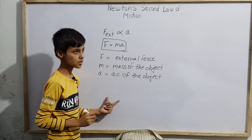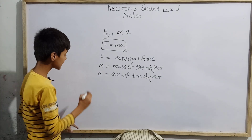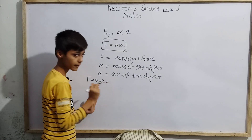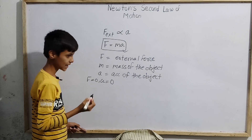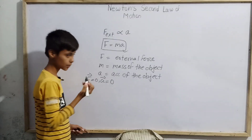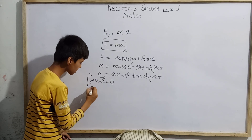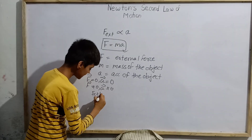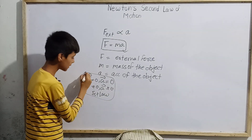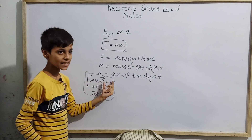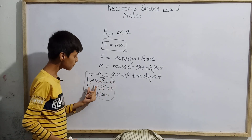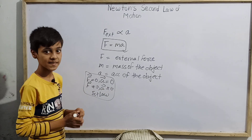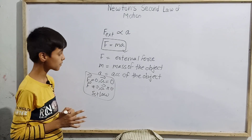Newton's first law of motion predicted that in an inertial frame of reference, when F equals zero then A equals zero — these are vector quantities. And when F is not equal to zero, then A is not equal to zero. This is Newton's first law, and it is valid only for inertial frames of reference.